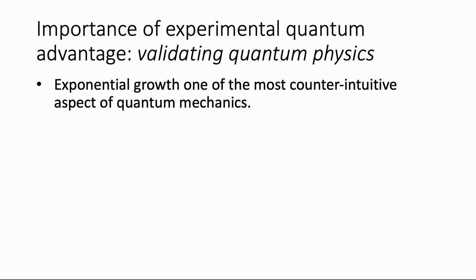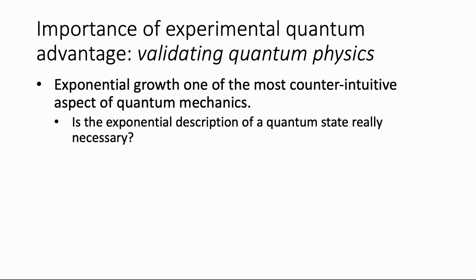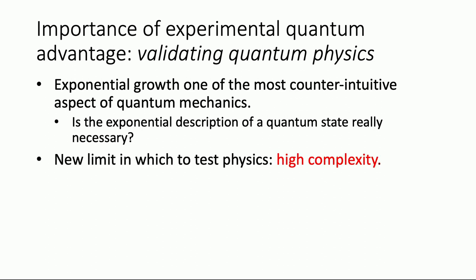The exponential growth of the Hilbert space — the fact that describing an n-qubit quantum system in principle requires specifying 2^n separate parameters — is something we take for granted in quantum mechanics, but it's actually quite counterintuitive. Since the very foundations of quantum theory over a hundred years ago, people have asked from various perspectives: is this exponential description of a quantum state really necessary, or is there a succinct polynomial-sized description hiding behind the scenes that we just haven't discovered yet?